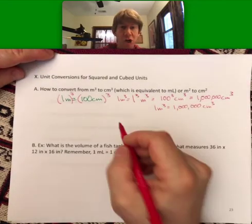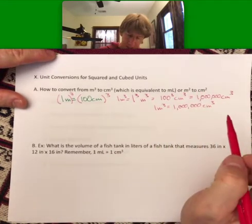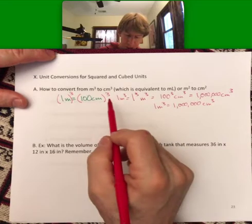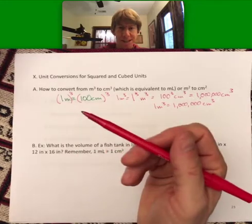One meter cubed equals one million centimeters cubed, and this principle always works. If you have something that's squared, for example, and you know the conversion factor, if it's not squared, square both sides to get the answer.